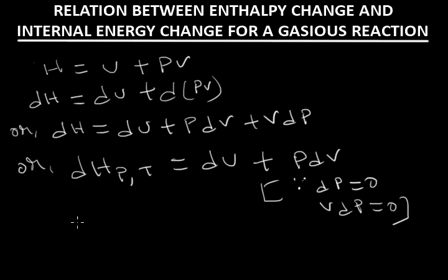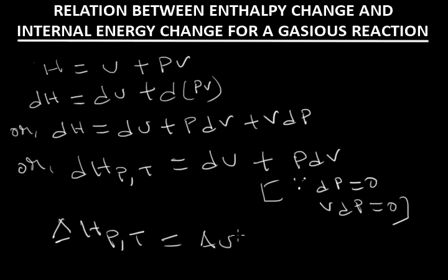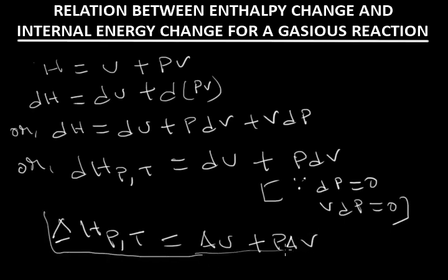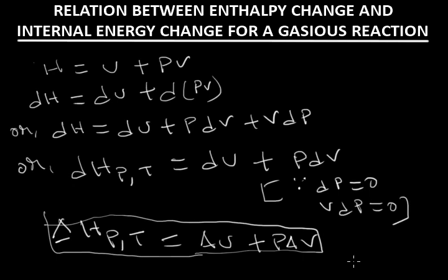Now if the change is finite, in place of d we can write delta. So delta H at constant pressure and temperature equals delta U plus P delta V. This is a general relation between delta H, delta U, and volume change and pressure.